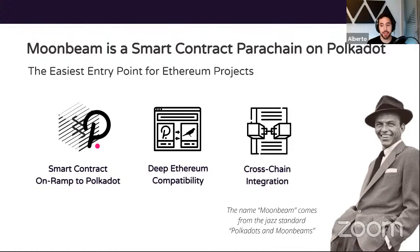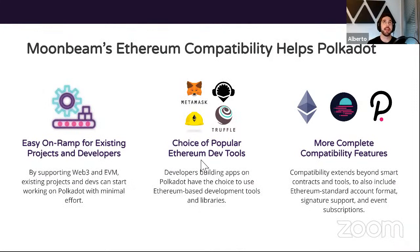We like to say that Moonbeam is the easiest entry point for Ethereum projects because we are fully focused on deep Ethereum compatibility. When we talk about Polkadot, we have to talk about cross-chain integration, because the main selling point is being able to communicate with all the parachains in the ecosystem. The name Moonbeam comes from the jazz standard 'Polka Dots and Moonbeams.' Moonbeam's Ethereum compatibility helps Polkadot in several ways — the first being an easy on-ramp for existing projects and developers.